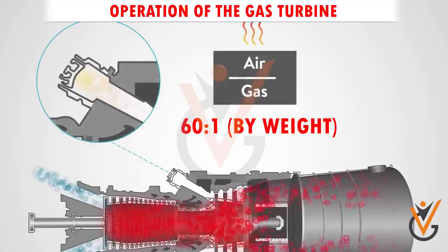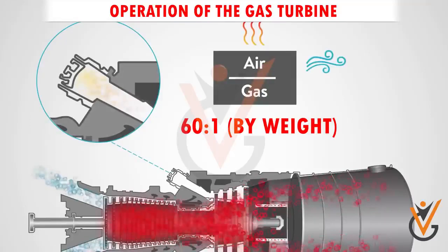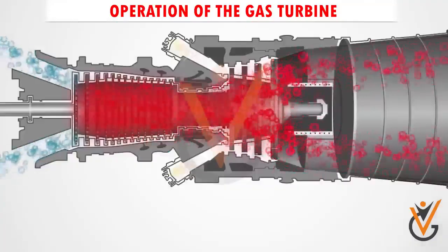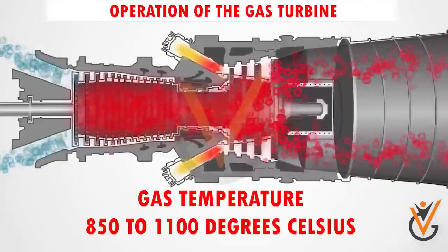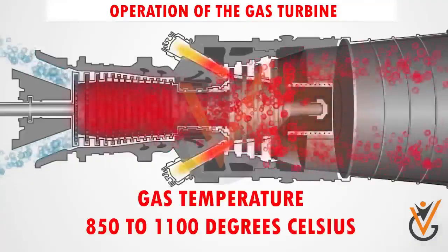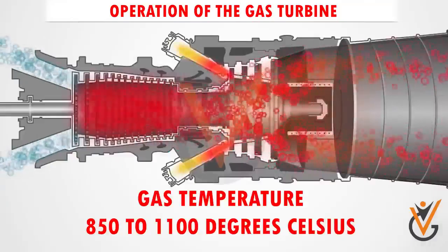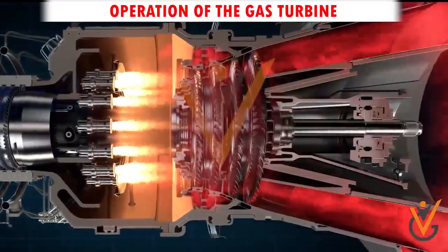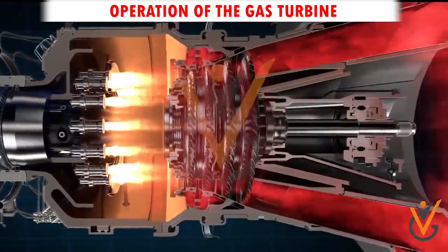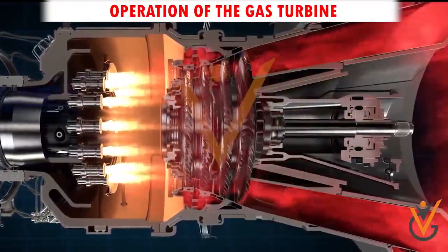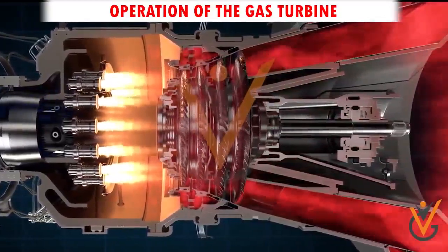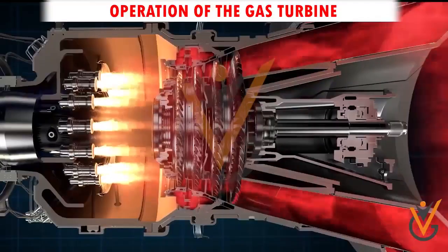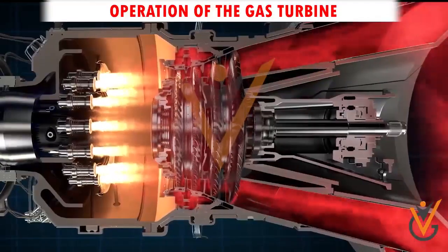The gas is slightly contaminated with products of combustion, and the gas temperature varies from 850 to 1100 degrees Celsius. It is then expanded through a nozzle to convert part of its thermal and pressure energy into kinetic energy. The resulting high-velocity air stream impinges on the blades of the turbine.